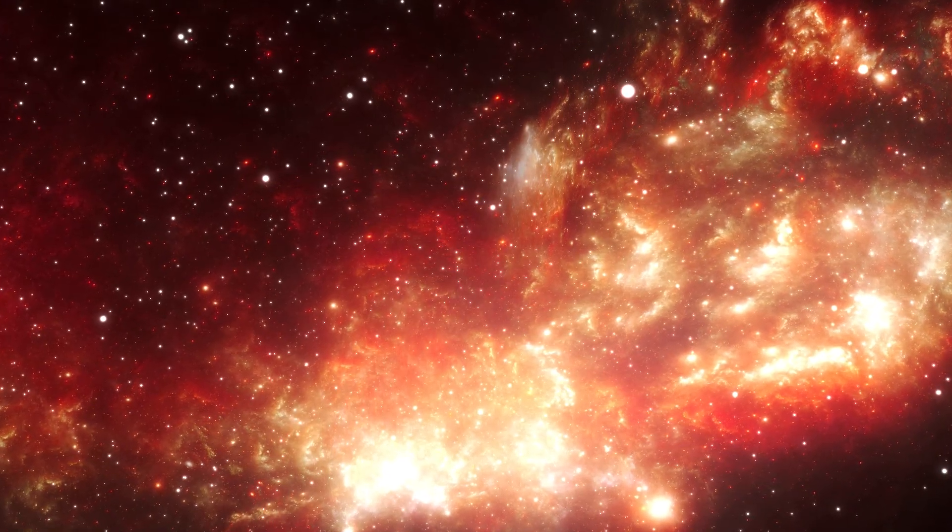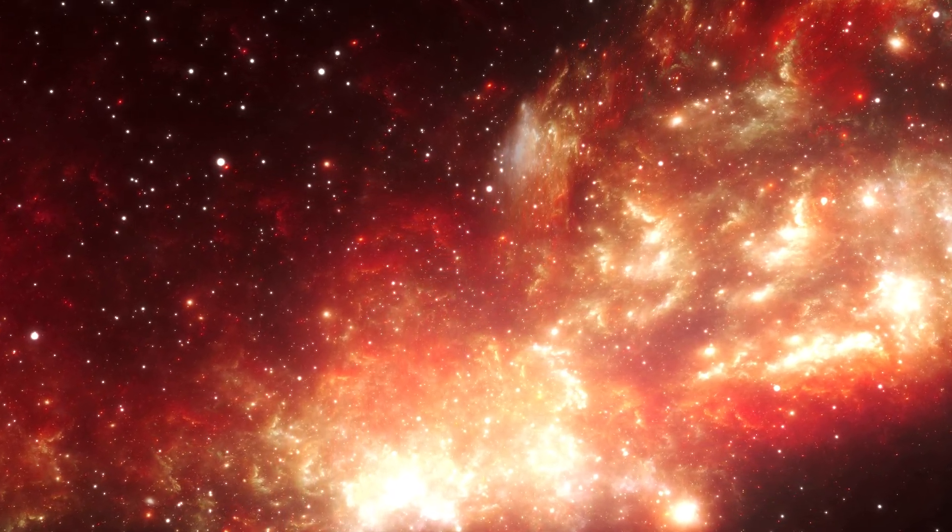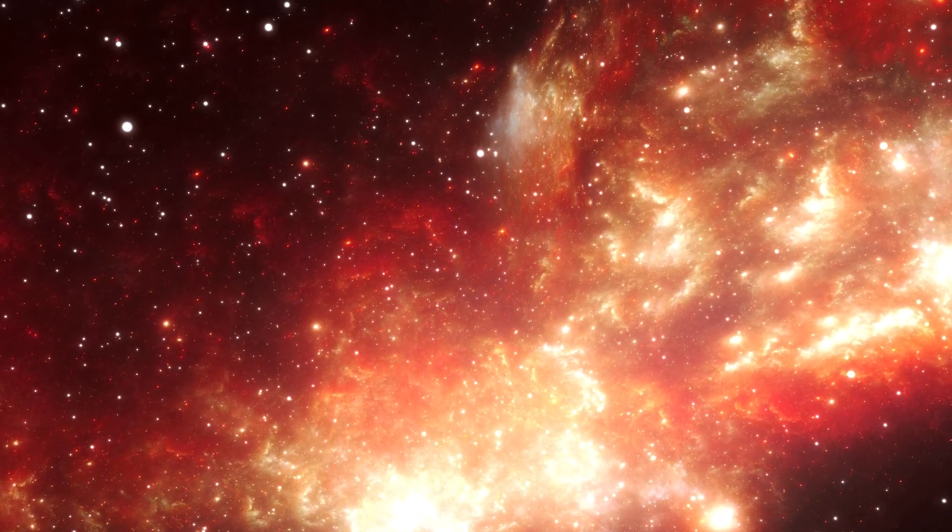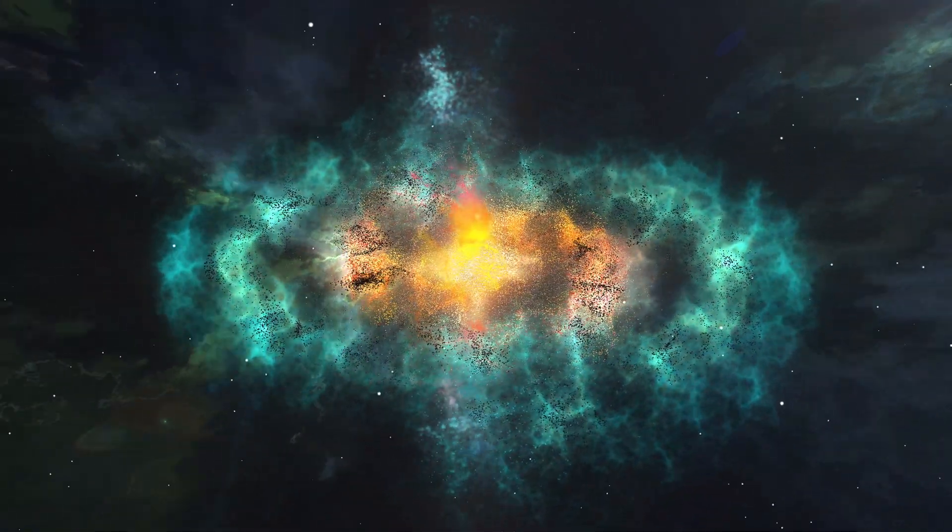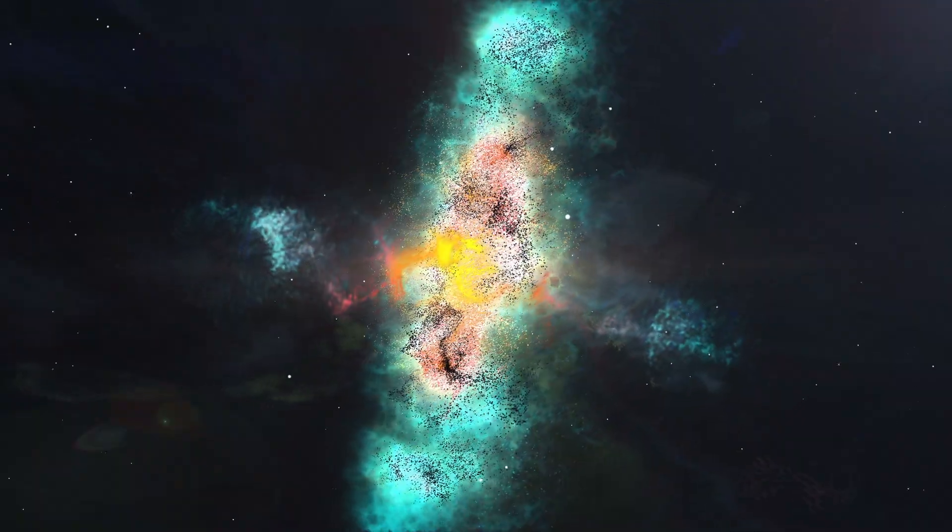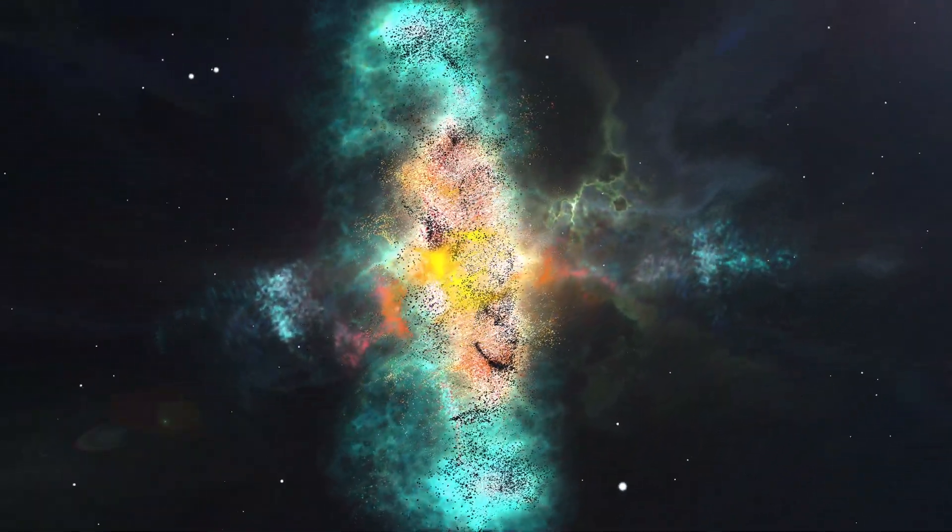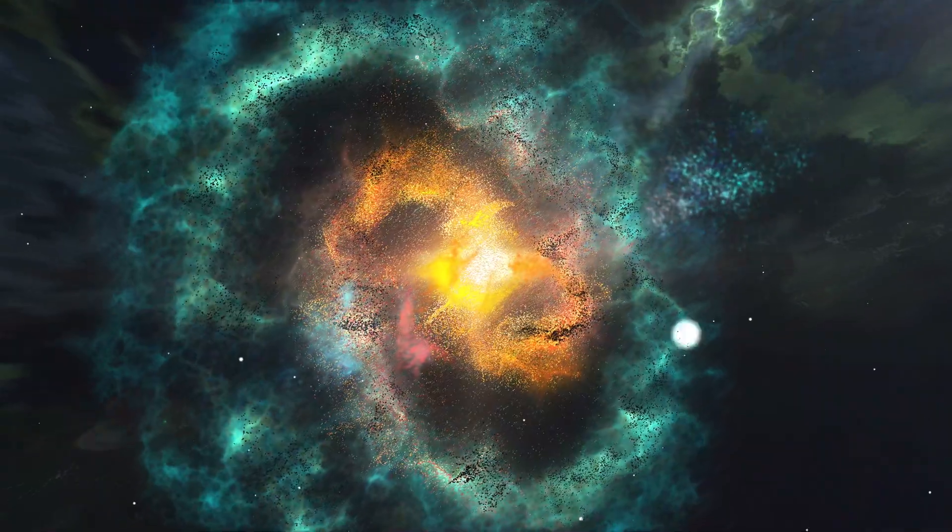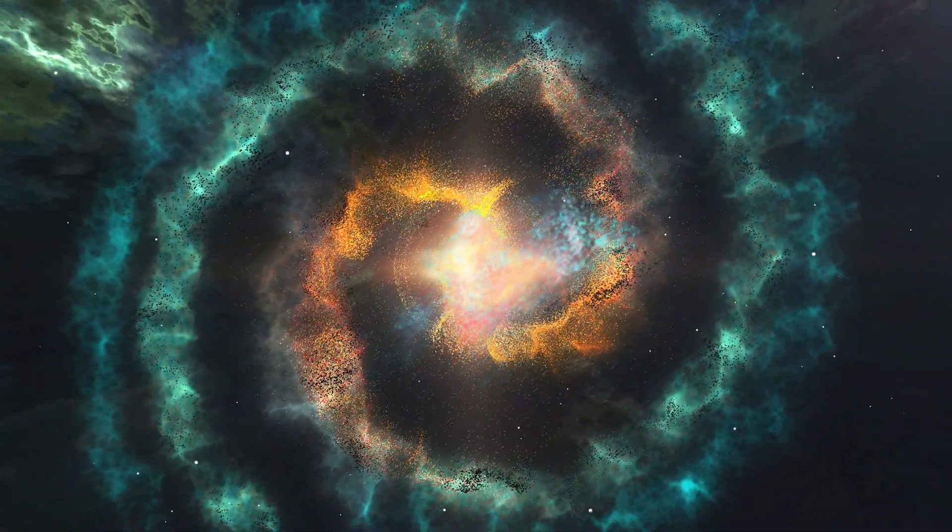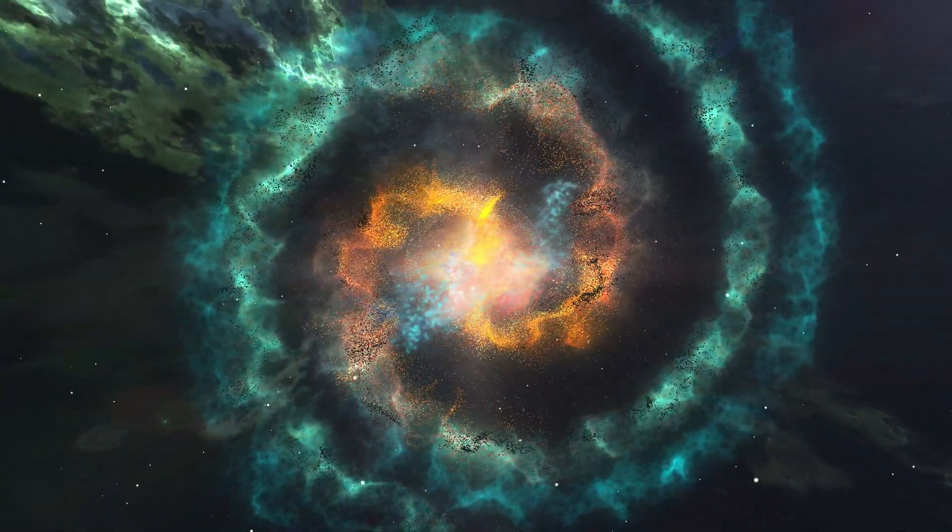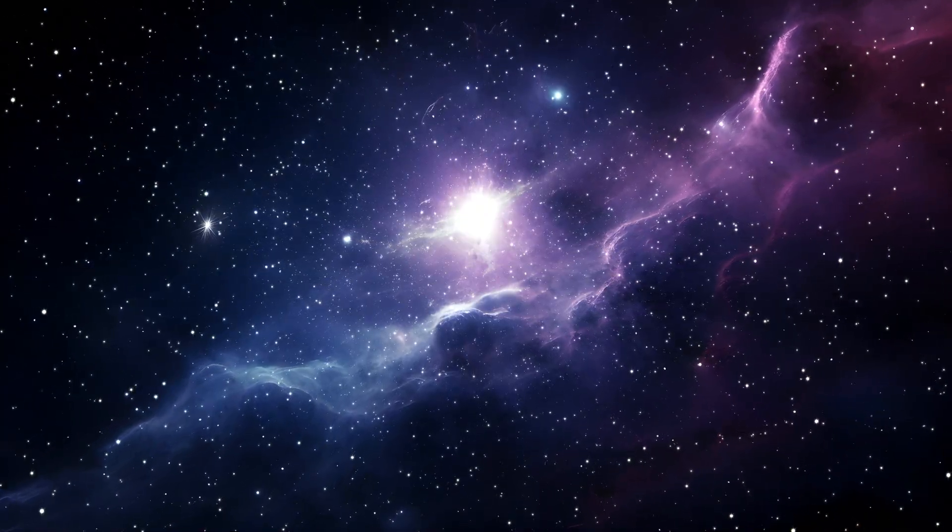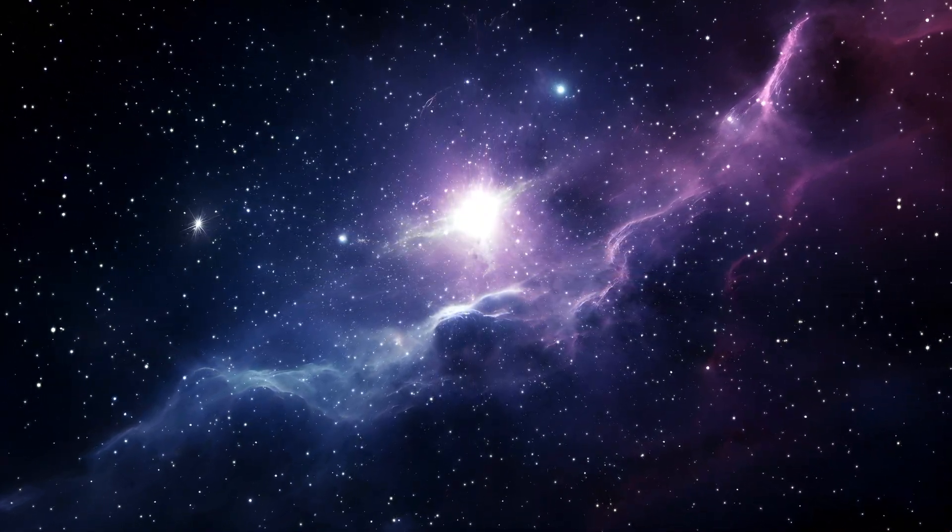When the universe first emerged, the matter it contained was densely packed and relatively uniform. However, quantum fluctuations led to some regions becoming slightly denser. These denser areas collapsed under gravity more quickly, drawing in more matter from the surrounding, less dense regions. As the universe expanded, these small, dense regions grew and began to cluster together, forming galaxies that attracted one another, ultimately creating a vast, foam-like web of filaments throughout the universe.